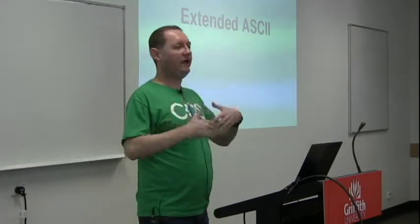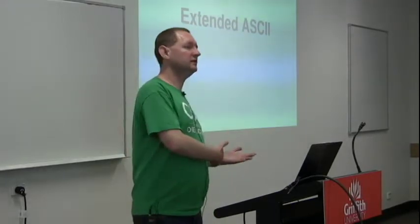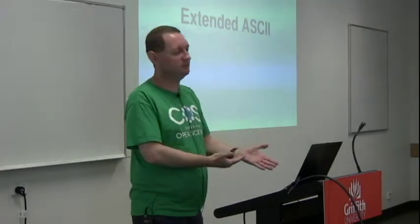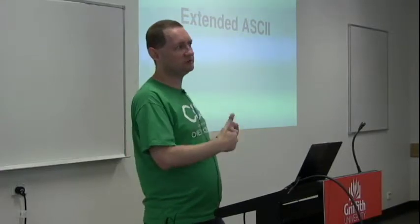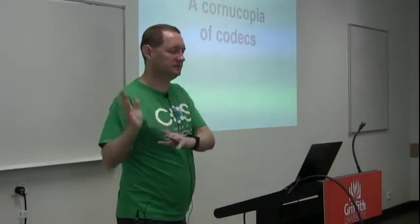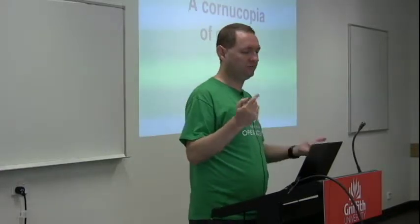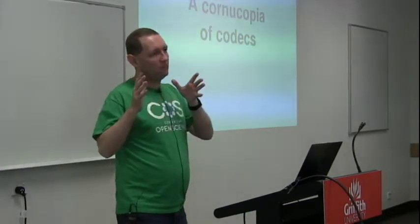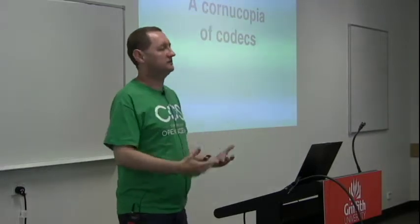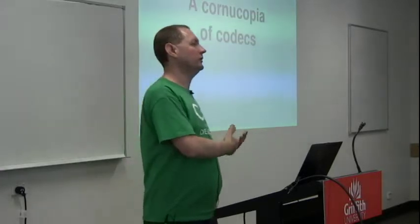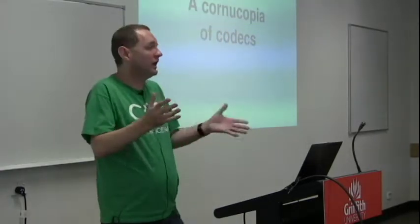However, adding an extra 128 characters isn't going to really help you deal with Japanese, Chinese, or Korean. For the Asian countries, even extended ASCII just wasn't anywhere near good enough. So we had an explosion in the number of language codecs. If you want to find widely used ASCII-incompatible codecs, the place to look is East Asia — things like Shift JIS, Big5, ISO 2022. ASCII and extended ASCII simply could not meet the needs of Asian countries, so they came up with their own solutions.